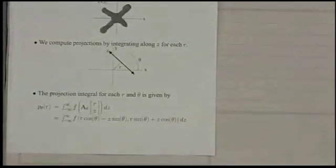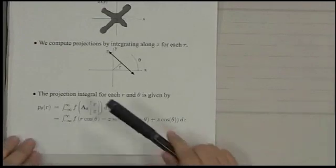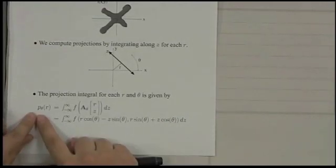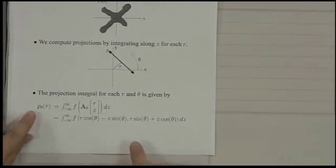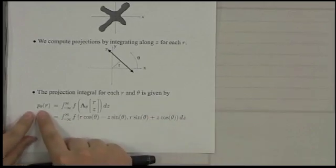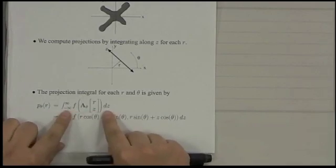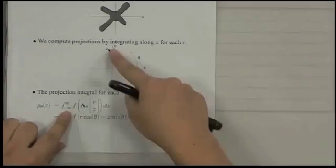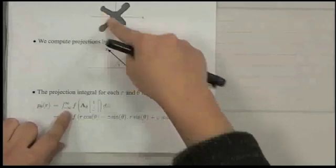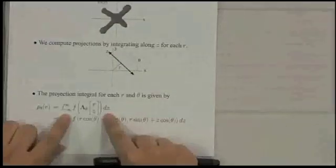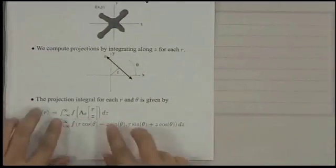Then, if we calculate the projection integral, the equation is like this. So p_theta(r) equals, we want to take an integral along z direction. We take integral in this direction. And then we want to take an integral.